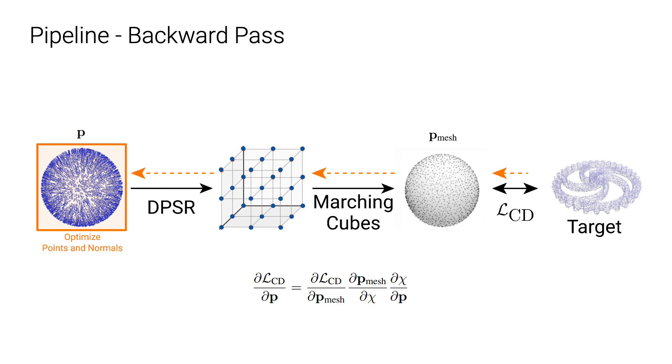As for the backward path, we back-propagate the chamfer loss through the sample mesh point, P-mesh, to optimize the source point cloud, P. All terms in these backward path equations are differentiable, except for the marching cube step. But we found the gradient for this part can be effectively approximated by the inverse normals of the sample mesh points.